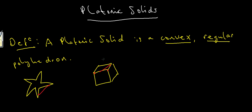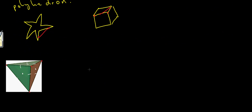Now let's look at an example of a platonic solid. This is a tetrahedron — it's the simplest possible platonic solid. How many edges does it have? We've got a total of one, two, three, four, five, six edges.